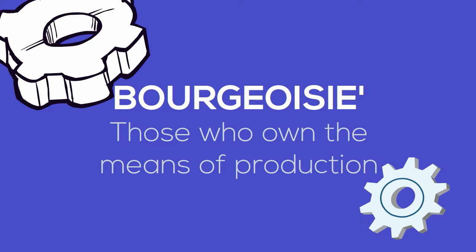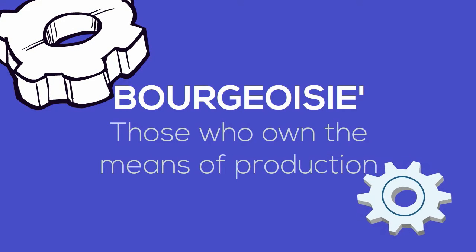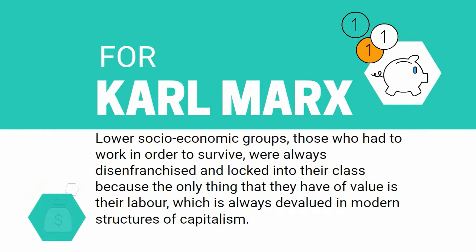Through Marxist theory, we begin to link class to more modern ideas about capitalism. For Marx, lower socioeconomic groups — those who had to work in order to survive, what we might call the proletariat — were always disenfranchised and locked into their class because the only thing they have of value is their labour, which is always devalued and exploited in modern structures of capitalism.